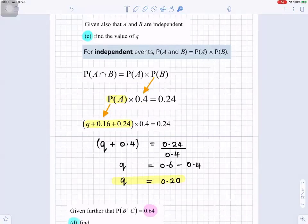Now, the probability of A is Q plus 0.16 plus 0.24 times 0.4 equals to 0.24. So 0.16 plus 0.24 gives you 0.4. And times 0.4 goes to the right, it becomes divided by 0.4. So 0.24 divided by 0.4 gives 0.6. And the plus 0.4 goes to the right, it becomes minus. So 0.6 minus 0.4 gives you Q equals 0.20.